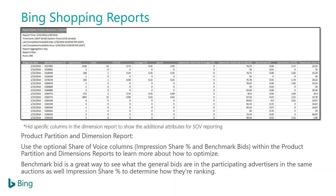I schedule this on a weekly basis and think it's a best practice for everyone to do the same. For the dimensions report, you can look at how you might want to break things out more granularly — using brand, categories, and custom labels to see what you should be targeting more or excluding, and adjusting bids accordingly.